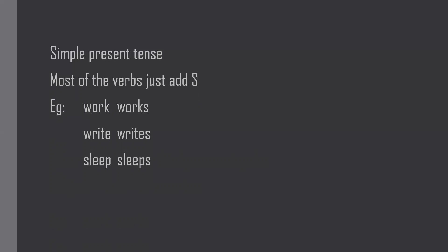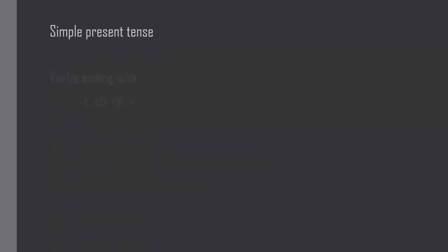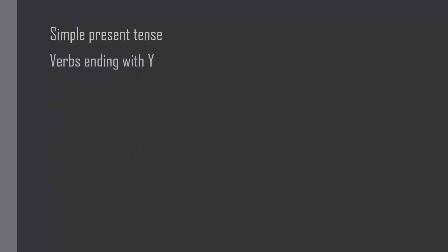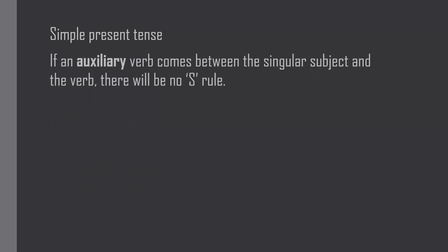Where do we add ES? If a verb ends with S, CH, SH, or X, we add ES — for example: kiss/kisses, wash/washes, teach/teaches, fix/fixes. And if a verb ends with Y, we add IES — for example: study/studies, try/tries.